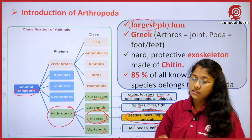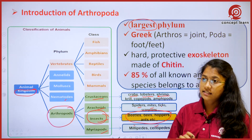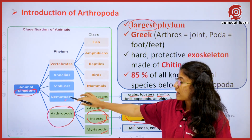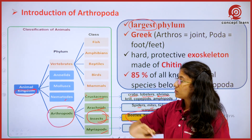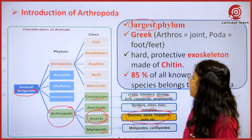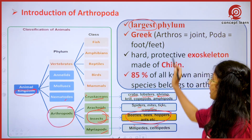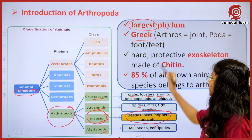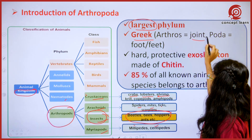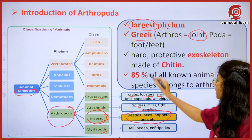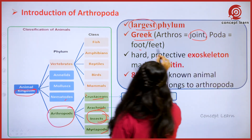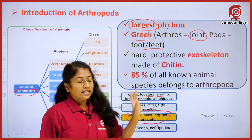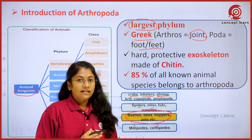Arthropoda is the largest phylum among all the remaining phylums like nematodes, mollusks, and annelids. The name is derived from the Greek where 'arthros' represents the joint and 'podos' means the feet.